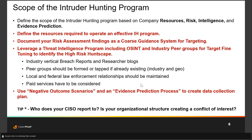Leverage threat intelligence, including open source intelligence and industry peer groups, as fine-tuning for your huntscape. Look at vertical industry breach reports within your peer groups, make sure you have connections to local and federal law enforcement for insight on events happening in your vertical, and certainly consider paid services. Another tip: who does your CSO report to? In many organizations the CSO reports to the CIO, but that creates a conflict of interest. It's probably better to have your top security individual reporting to the CEO, CFO, or directly to the board.